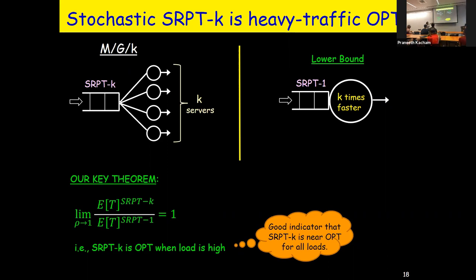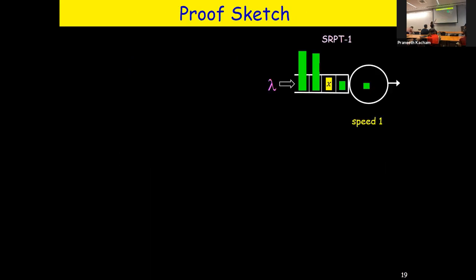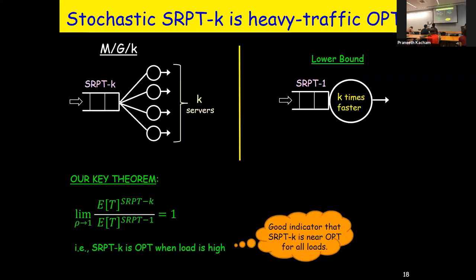Let's go into a proof sketch of why this is happening. When load is high, lots of stuff is coming in, the servers are kept busy, and they kind of feel like a single server. When you're a job of size x walking into the system, you're only bothered by jobs whose remaining size is less than yours — the relevant work. On the left we have slow servers at speed one-over-K; on the right the fast server. Only jobs in the yellow bubble — those with remaining size less than x — can influence you.